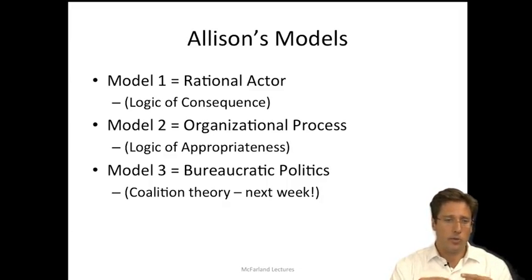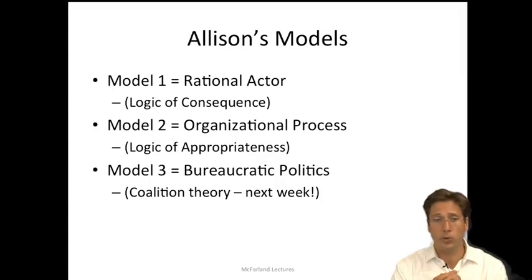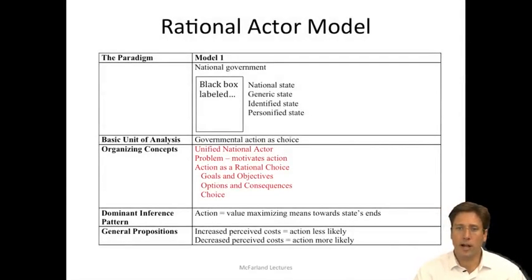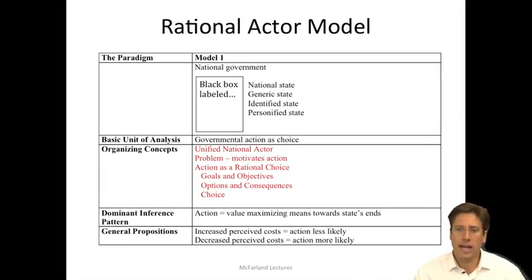The final model was called bureaucratic politics, and here we see a natural system, a dynamic coalition kind of view, something that we'll approach in more detail next week. When we use the rational actor model, we assume every action has a purpose or goal behind it, and we reconstruct action accordingly, thinking people are intentional. Looking at the table, we see the basic organizing concepts for the rational actor model.